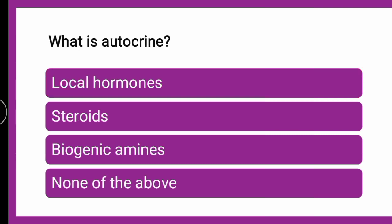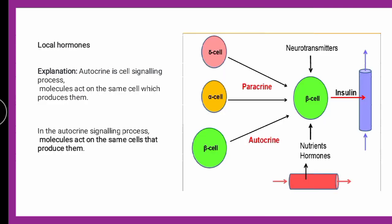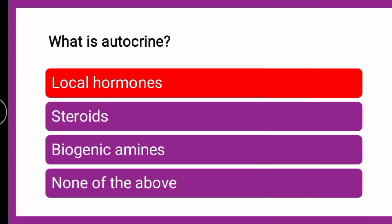The next question is: what is autocrine — whether local hormones, steroids, biogenic amines, or none of them? Autocrine is a cell signaling process where the molecule acts on the same cell which produces it. The cell produces it and it acts there only. An example is the beta cell and insulin. So autocrine is nothing but a local hormone.